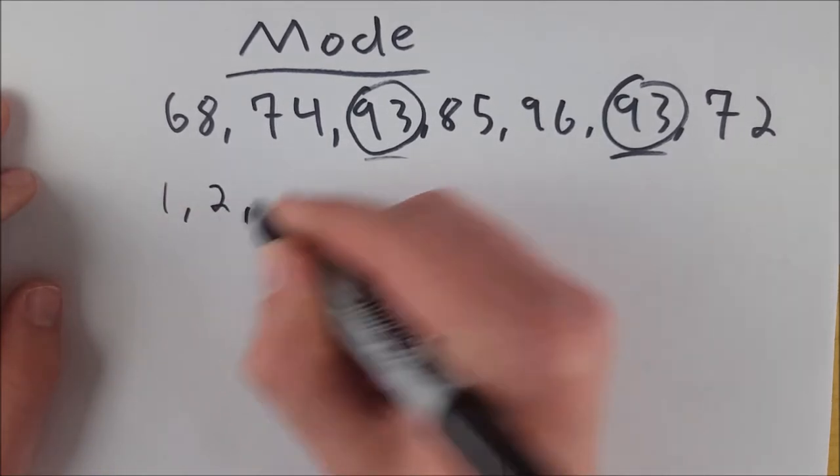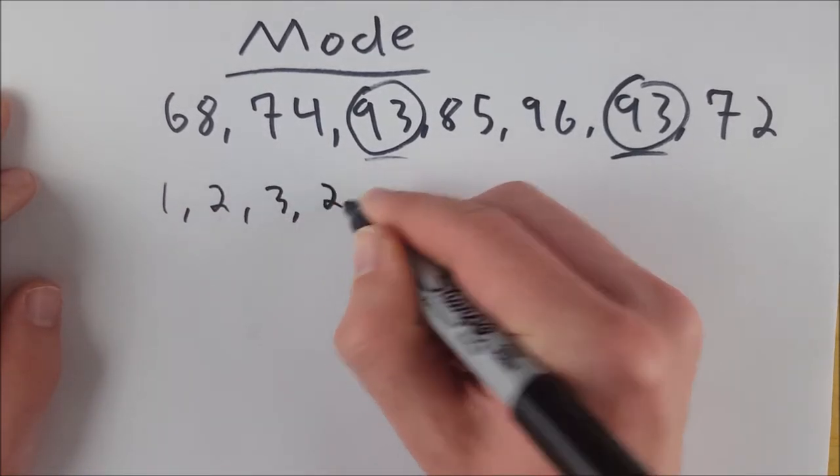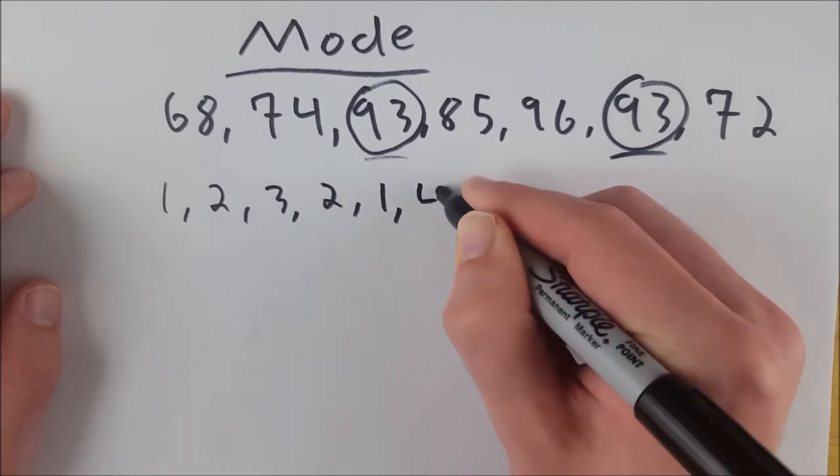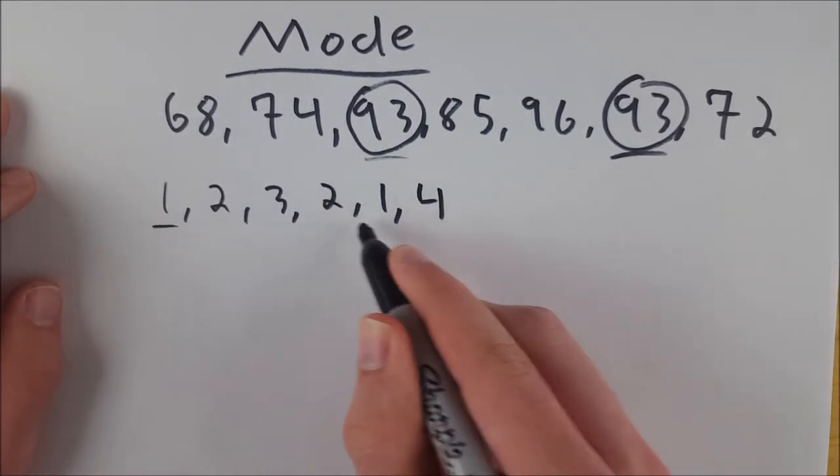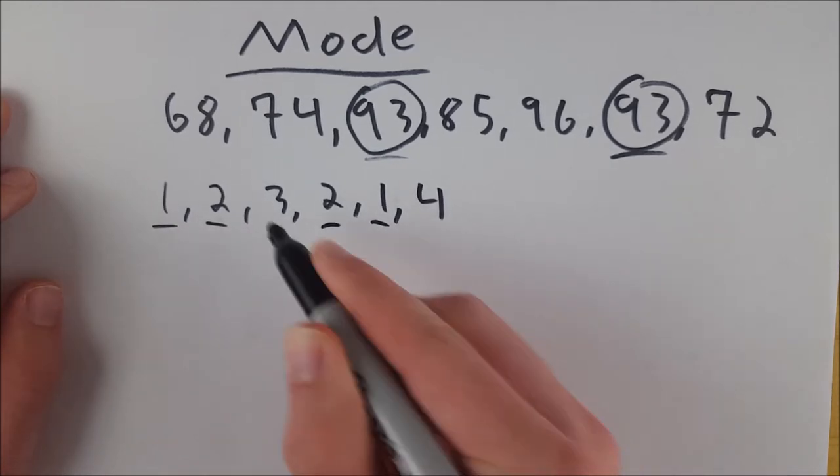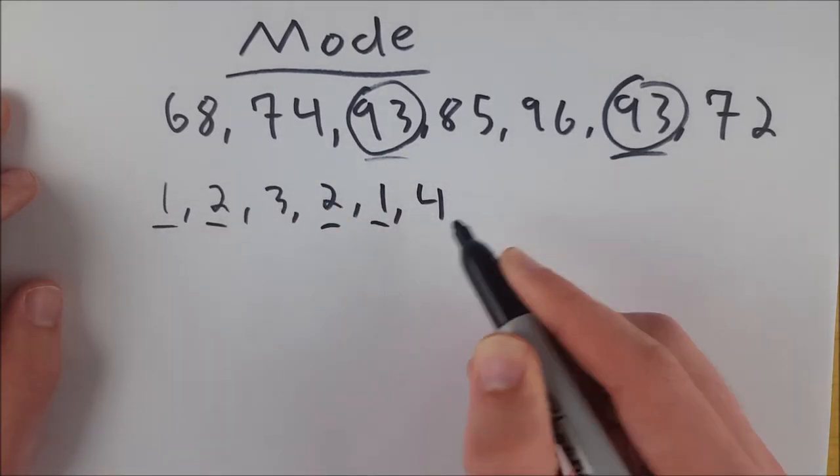...we had one, two, three, two, one, four. Here, we've got two ones. We've also got two twos, and then we have one three and one four.